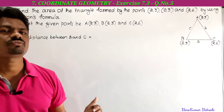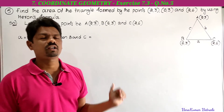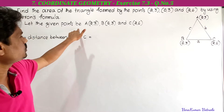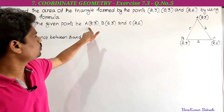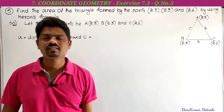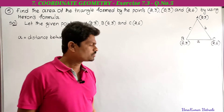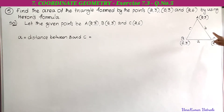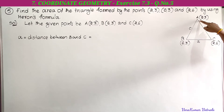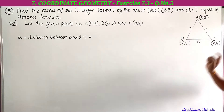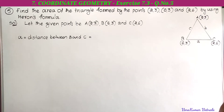We have to use Heron's formula to find the area of the triangle. Let the given points be A(2,3), B(6,3), and C(2,6) — so this is triangle ABC.